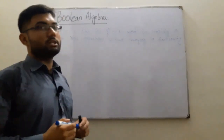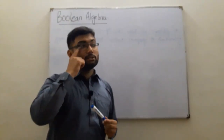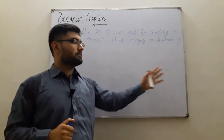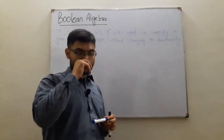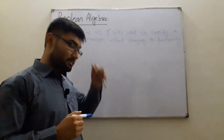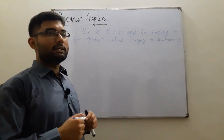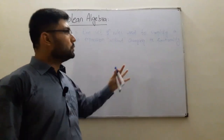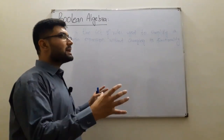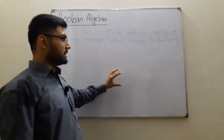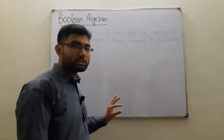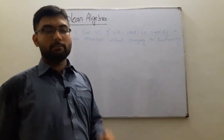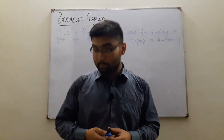Just as in ordinary algebra, where a very long equation is given and you simplify it using certain formulas — for example, (a+b)² = a² + b² + 2ab — similarly, here we will have rules to simplify a given expression. The simplified version will be compact but will have the very same meaning as the larger expression.